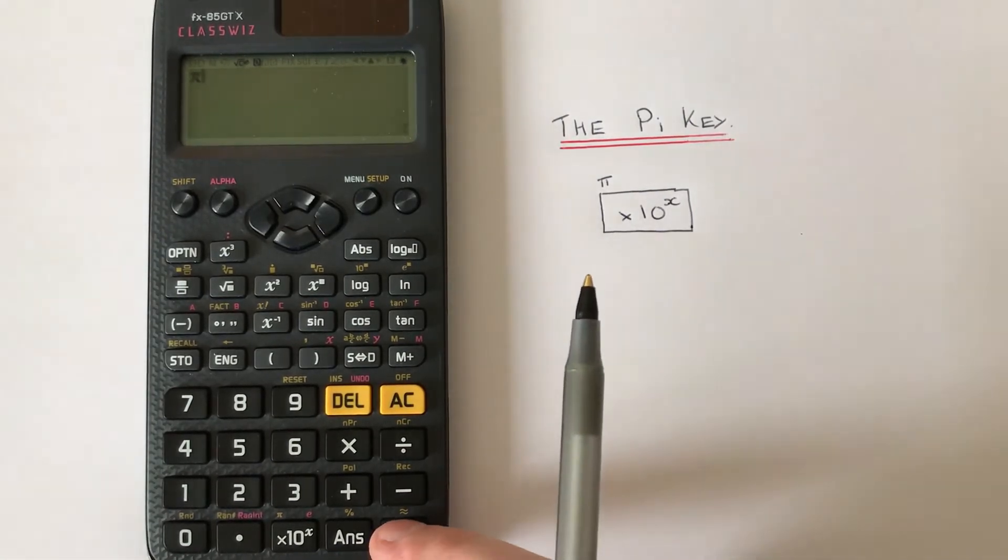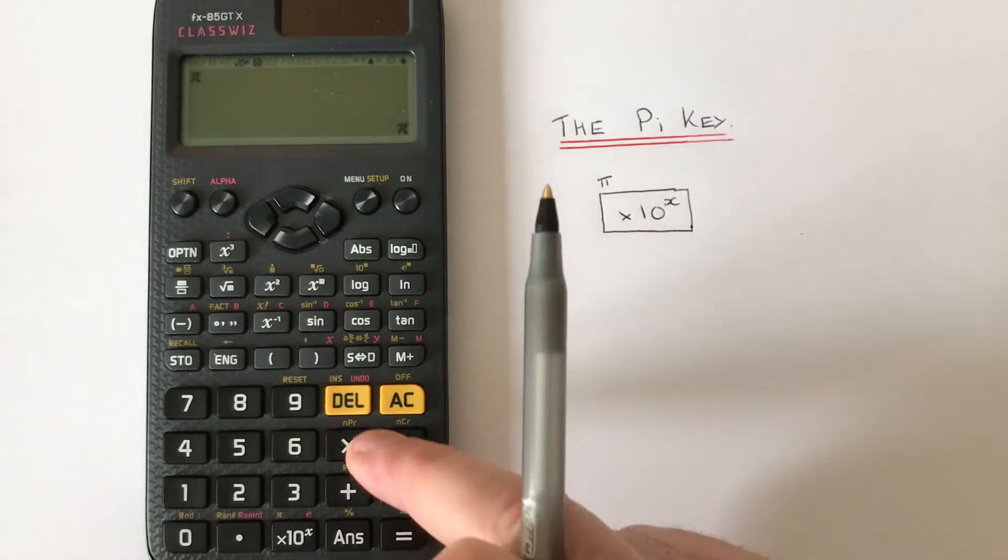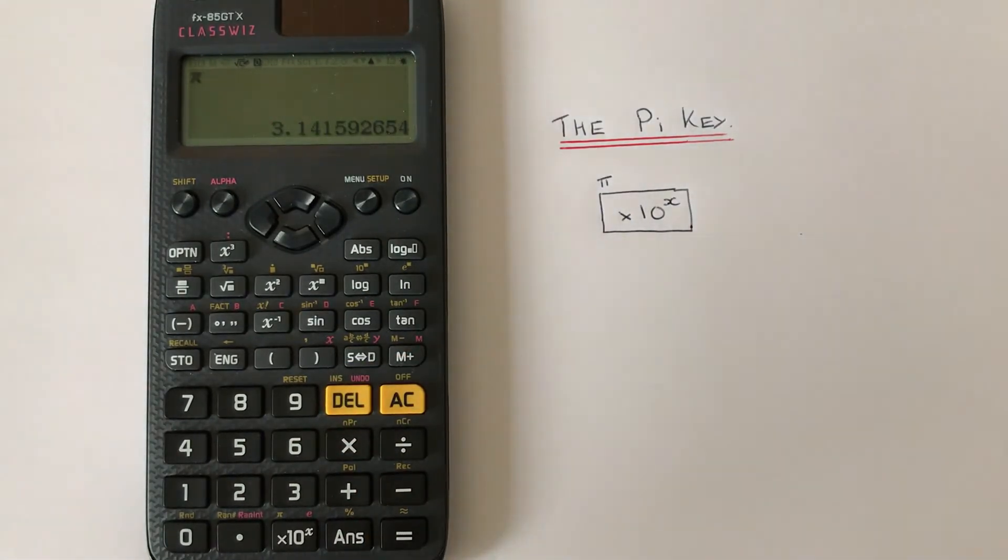press equals, and we can press the S⇔D button and we get 3.141592654. Let's repeat that one more time.